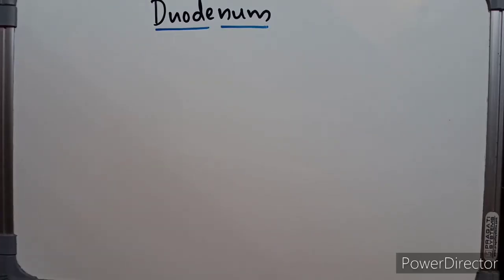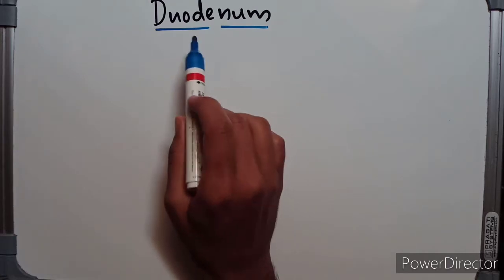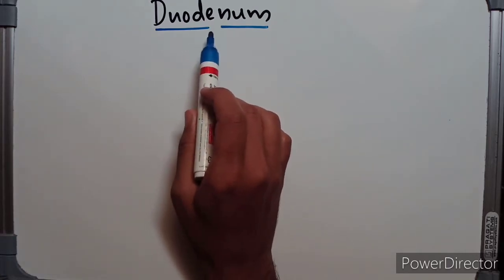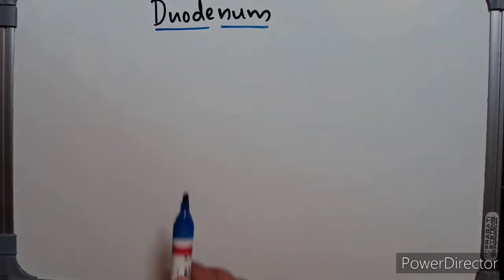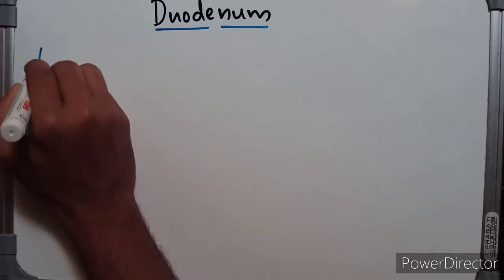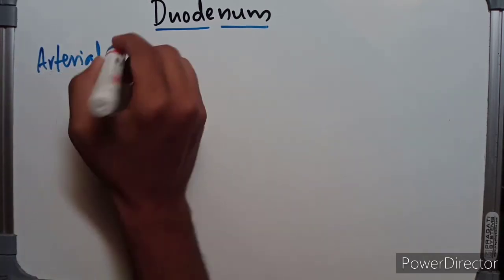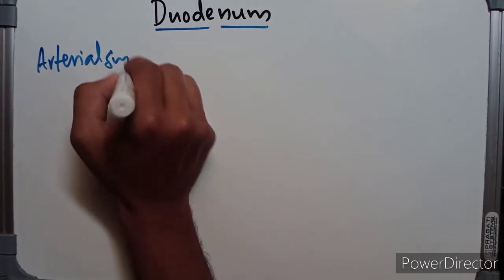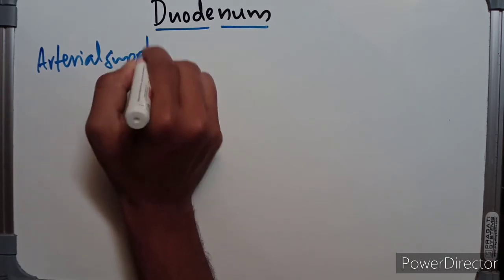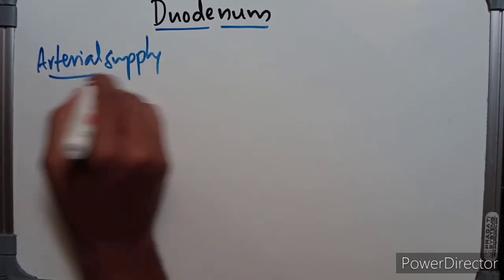Hello guys, welcome to my video. In this video we are going to discuss the blood supply of the duodenum. We will also look at the venous drainage, lymphatic drainage, and nerve supply of the duodenum. Coming to arterial supply of the duodenum.